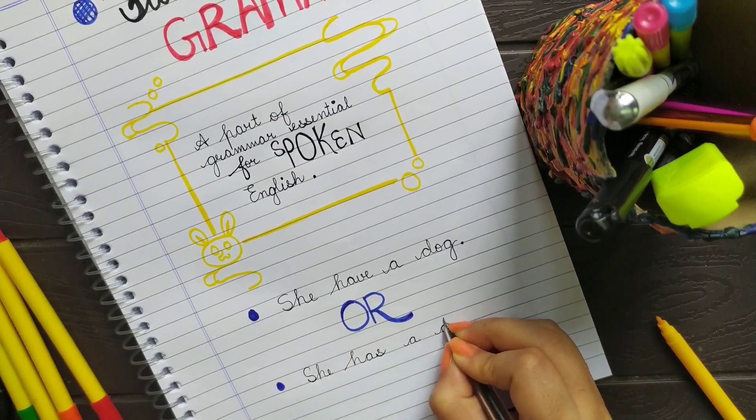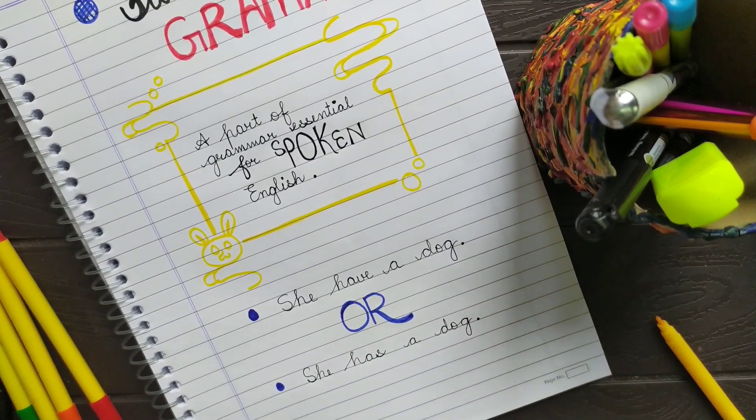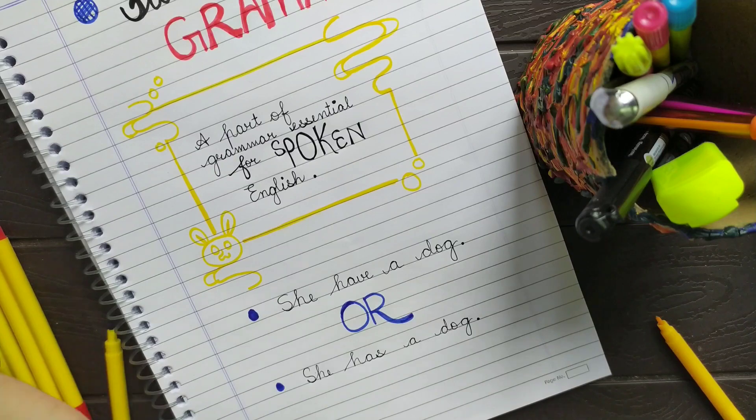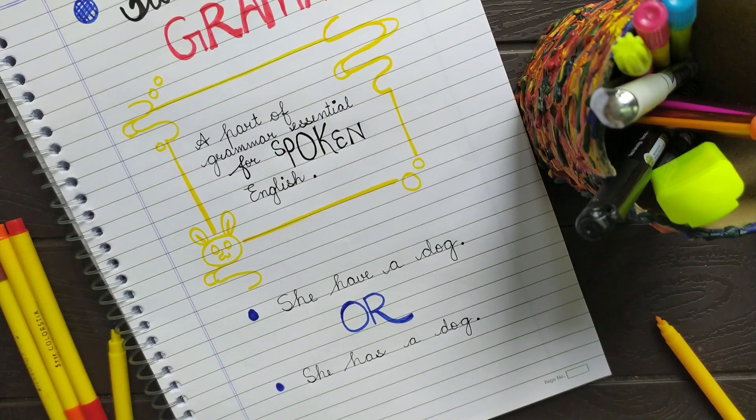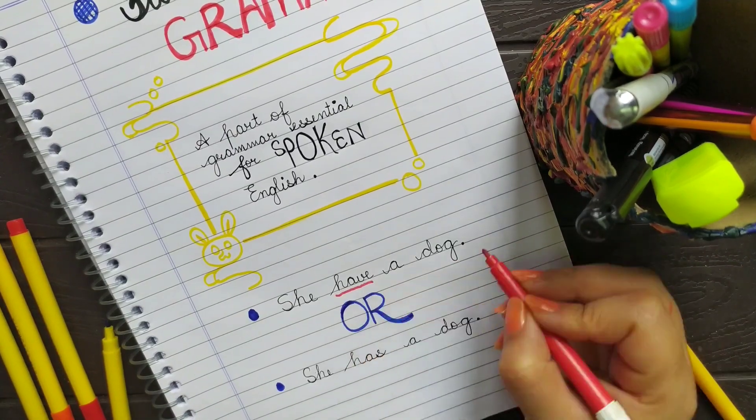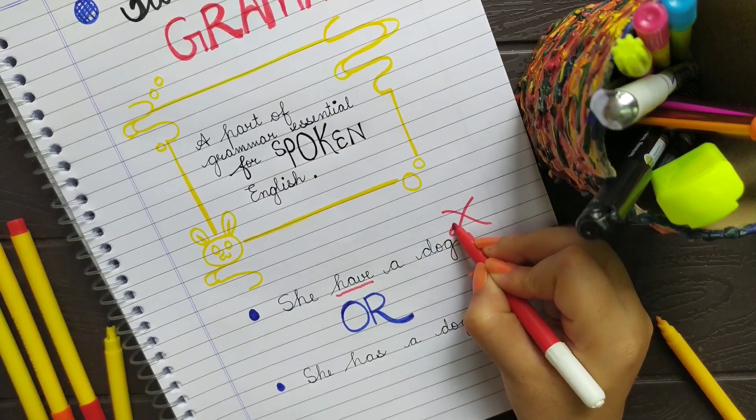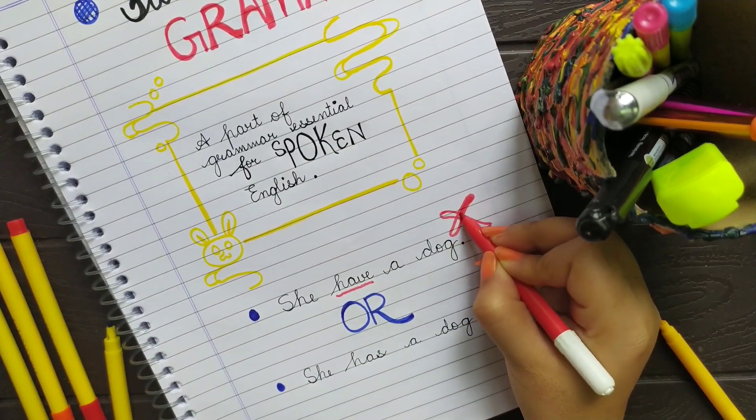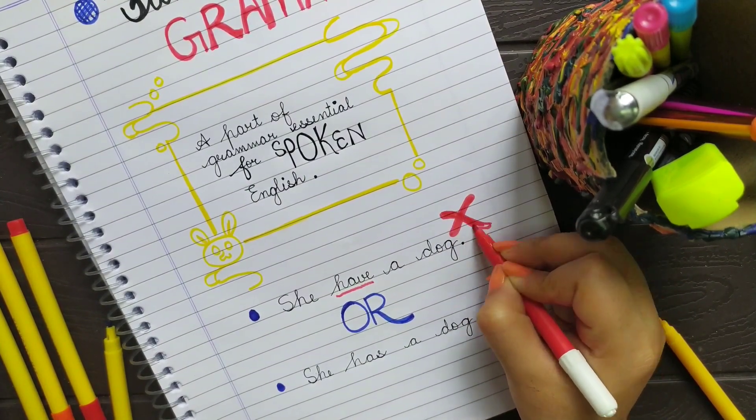Now you might be wondering why I have chosen 'has' over 'have.' The answer is because of the rules of functional grammar. Therefore we can say that knowledge of functional grammar lets you speak correct English, which ultimately boosts your confidence level.